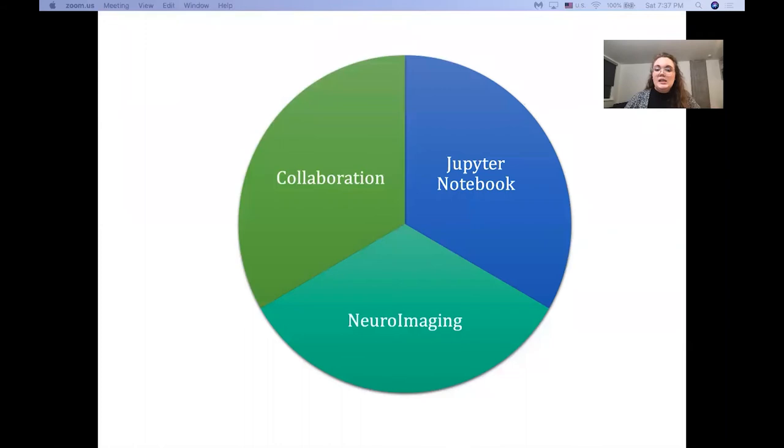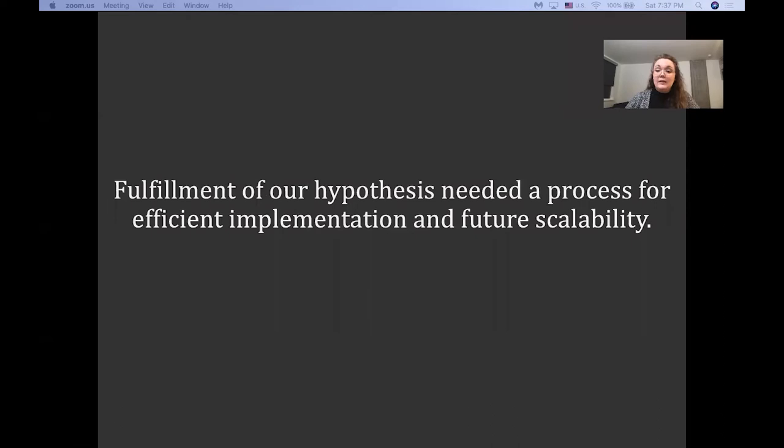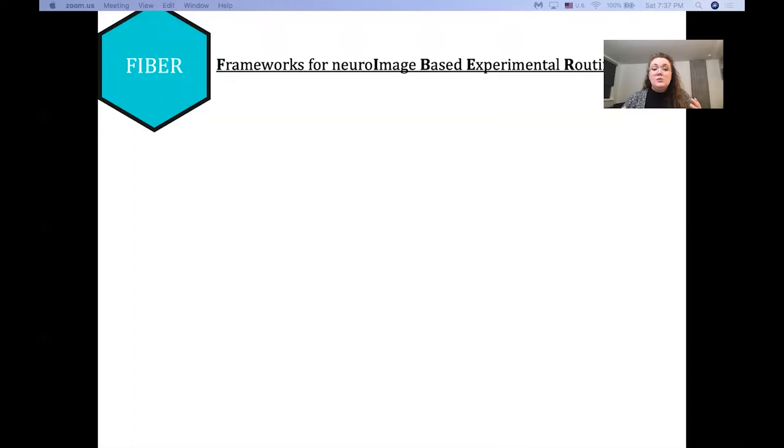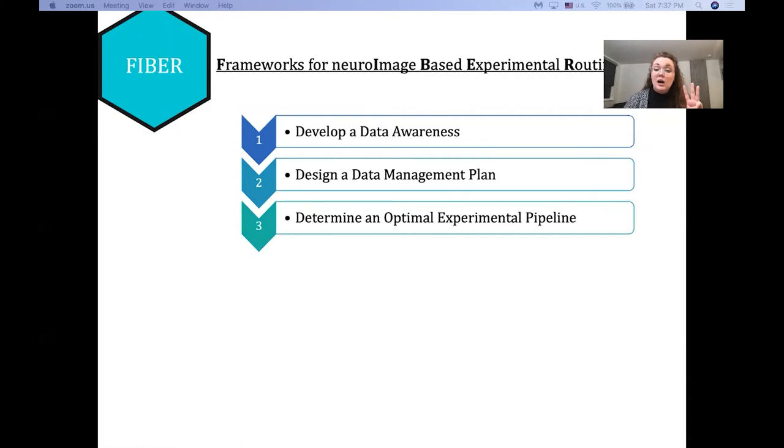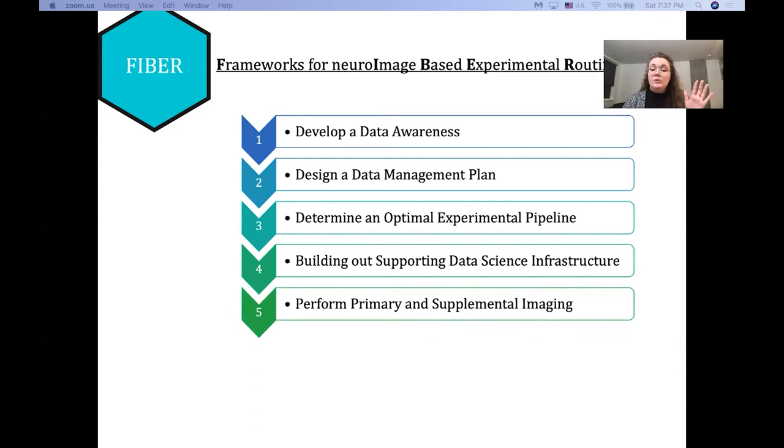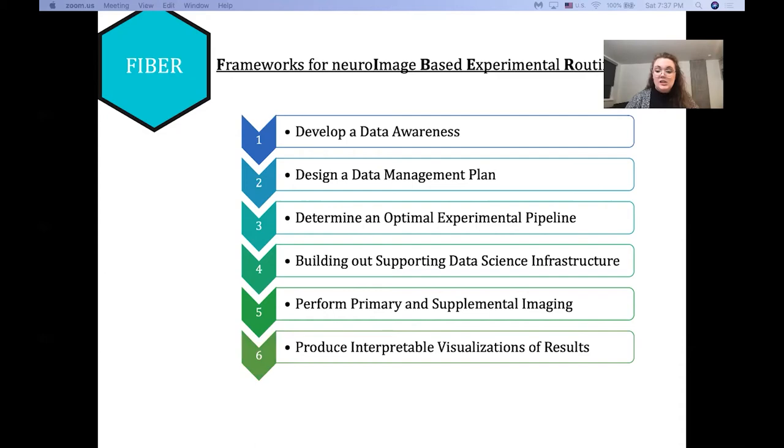But to fulfill our hypothesis, we need a process for efficient implementation and future scalability. So we developed our FIBER framework. It's a framework for neuroimage-based experimental routines that follows six steps. One, we develop a data awareness as a group. Two, we design a data management plan. Three, we determine an optimal experimental pipeline. Four, we build out the data science infrastructure. And then five, we perform our supplemental and primary imaging to finally produce interpretable visualization. What's great is that we actually do all five steps in a meeting in Jupyter notebook.